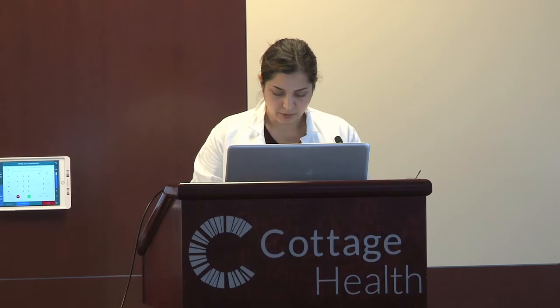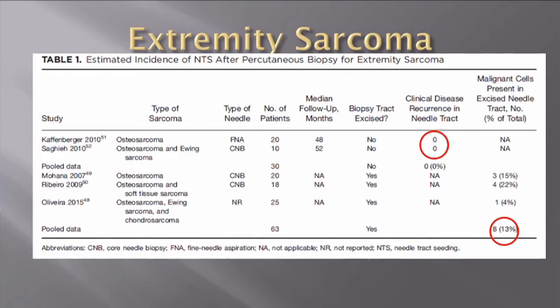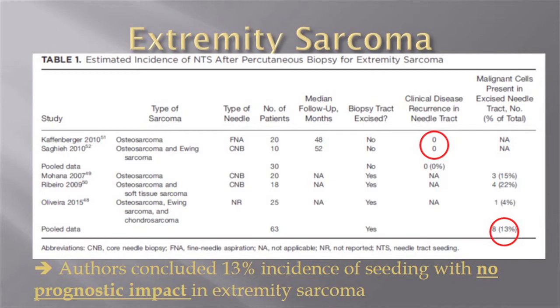The second part of this study pooled two other studies — Dr. Kaffenberger and Dr. Secchia's — which had only 30 patients. These patients underwent primary resection of their sarcoma but didn't have any excision of the needle tract at all. They were subsequently reported to have no seeding occurrence or clinical disease recurrence up to four years of follow-up, with imaging studies and physical exam showing no recurrence. The authors concluded that the incidence of extremity sarcoma seeding is only about 13% and the prognostic impact is very minimal.